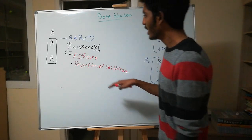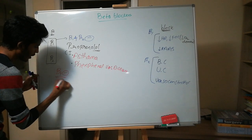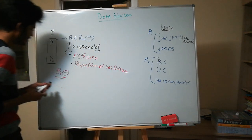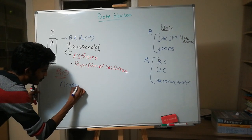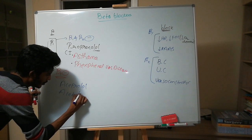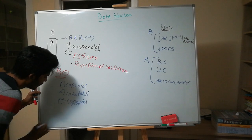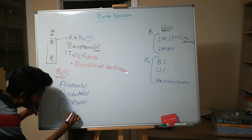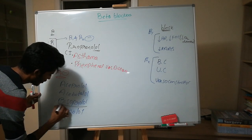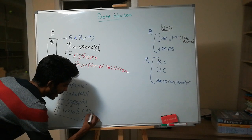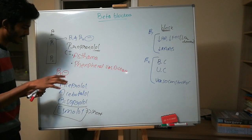Now let's talk about drugs which block only the beta 1 receptor — beta 1 selective blockers. These include acebutolol, bisoprolol, and esmolol. An important exam point: esmolol is the shortest-acting beta 1 blocker, acting for only 3 to 5 minutes.